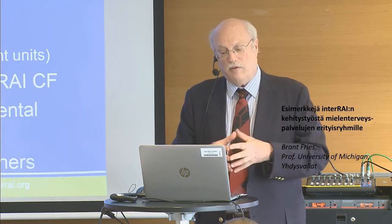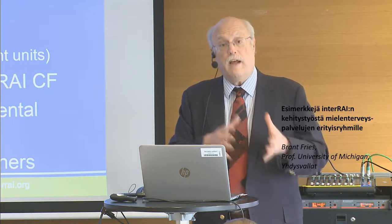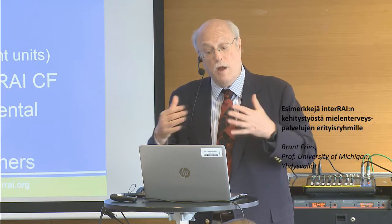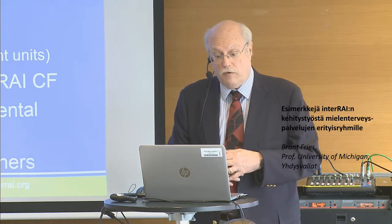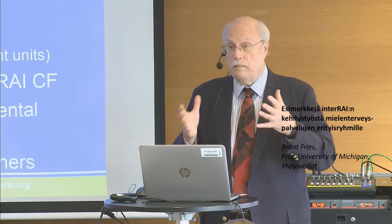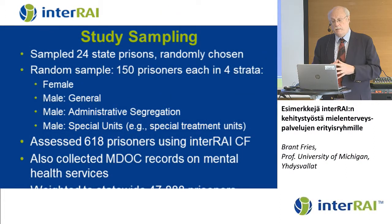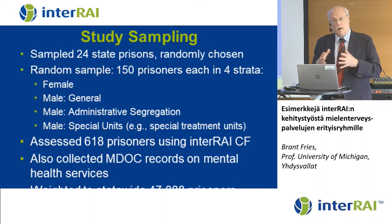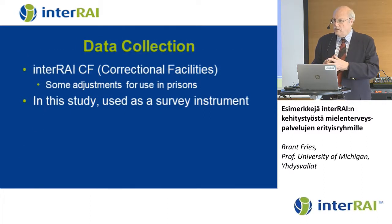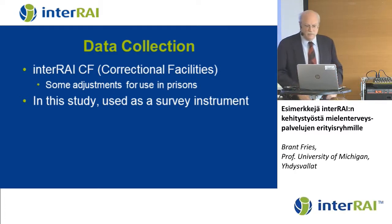The four strata were: males in the general population, those in segregation, those in special mental health treatment units, and females. There were too few females to break them out further. We assessed 618 persons using the InterRAI correctional facility instrument. We also collected Michigan Department of Corrections records on mental health services and weighted the results up to the full prison population of about 48,000 individuals. We used the instrument as a survey instrument and had to make some adjustments — for example, it didn't make sense to ask someone who had been in prison for 20 years about recent drug use.